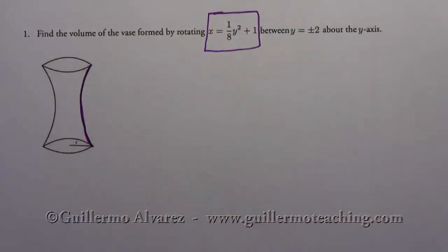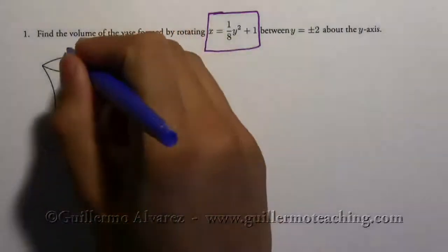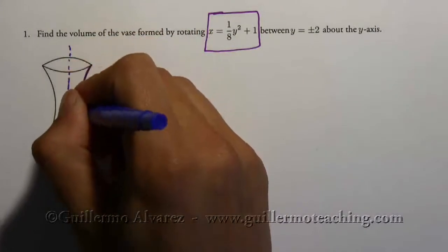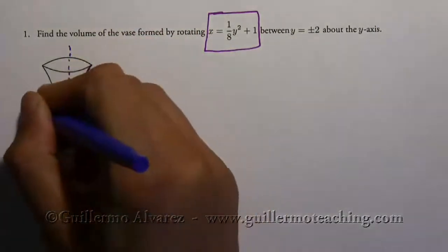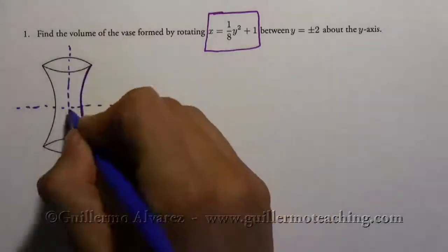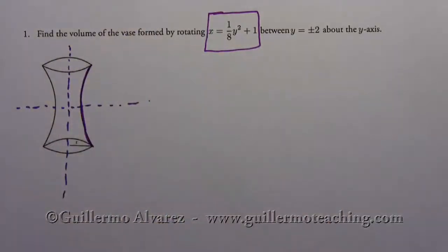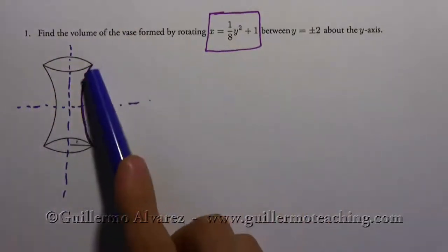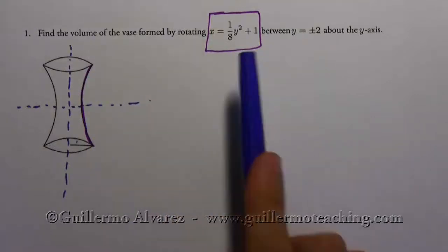So what I'm going to do is I'm going to put the axis. I'm going to draw an axis on top of this picture to help us see it better. Okay, so here's the origin. And this purple line is this equation.